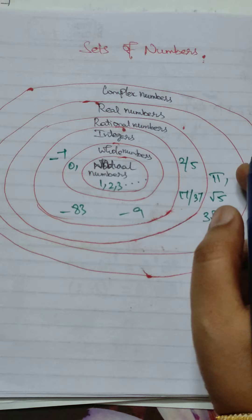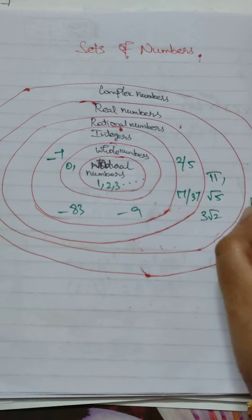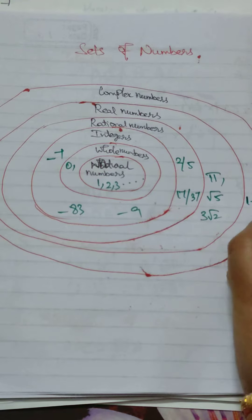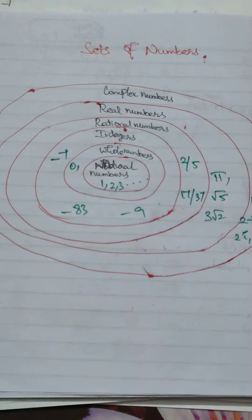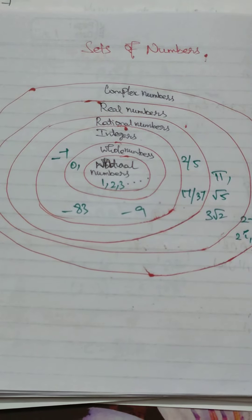The next one is complex numbers. This can be written as 1 minus 4i, 2 plus 3i, 2i. In this format, these are complex numbers.